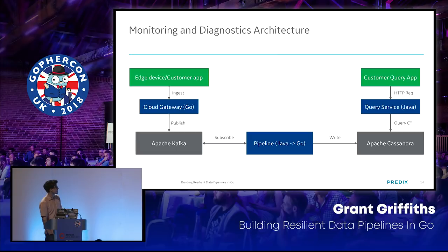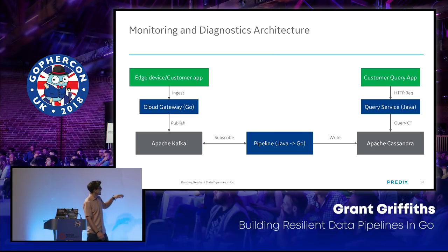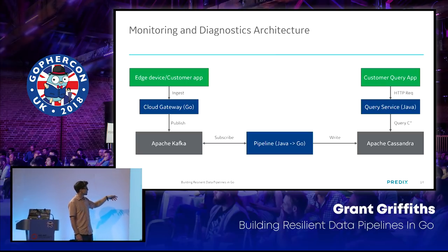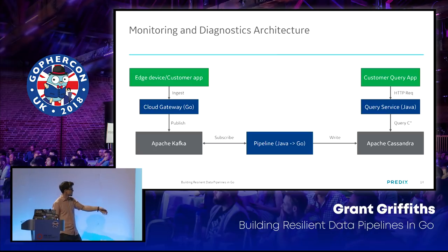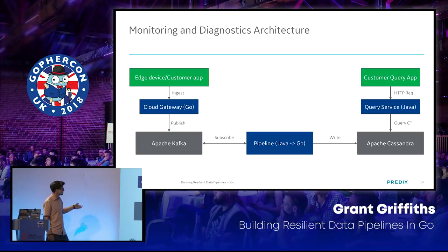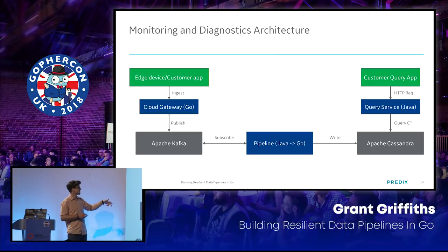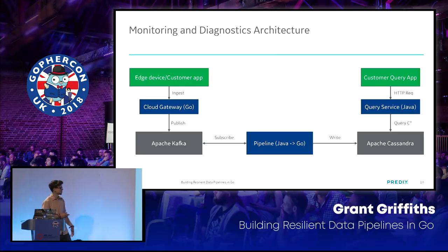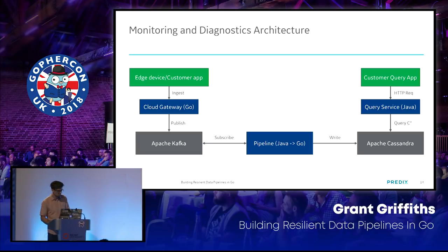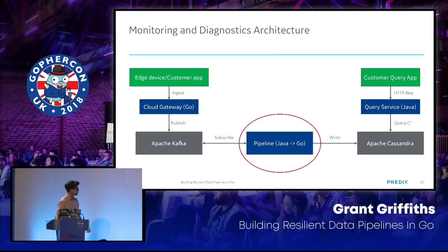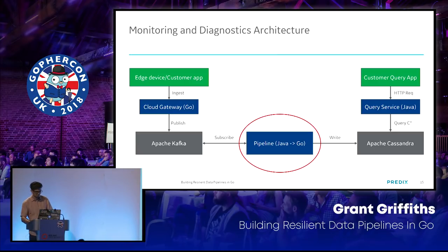This is what the architecture looks like for our data pipeline and monitoring and diagnostic service. You have customer apps and an edge device ingesting data — maybe a jet engine or wind turbine. That all goes to our Cloud Gateway, written in Go, which publishes to Kafka. Then we have a pipeline that subscribes from Kafka, writes to Cassandra, and does some business logic. We also have a query service written in Java that queries Cassandra, and customer apps or edge devices can interact with either.